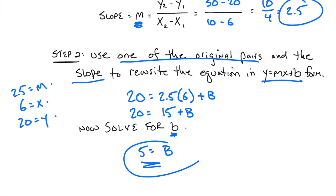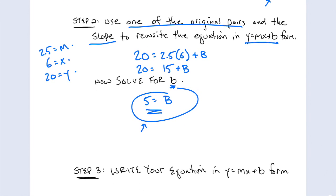So now we have the two parts that we need. We have the 2.5 for slope and we have the 5 for y-intercept. And that's it. Write your equation. y equals 2.5x plus 5. And we're done.